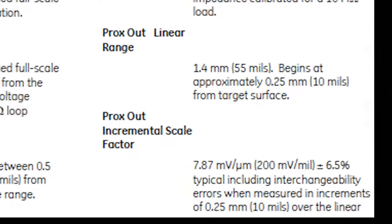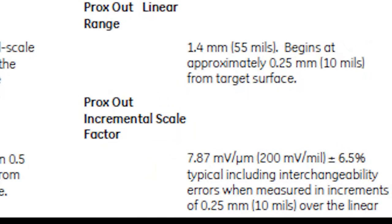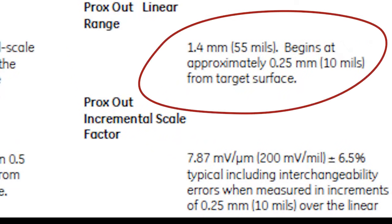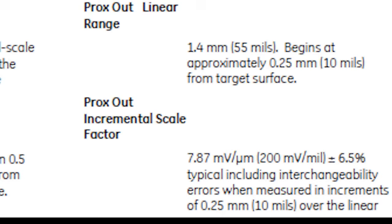First, identify the range of linearity. This specific probe has a range of fifty-five thousandths, starting at ten thousandths from the end of the probe. Most proximity probes have a response rate of 200 millivolt for every mil of travel. This means that every ten mils of travel will produce two volts of change.